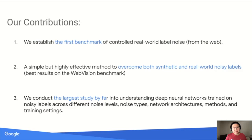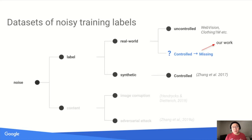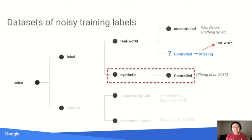Let's first look at our first contribution, which is a new dataset. While other types of noise exist, such as image content noise, our work focuses on label noise, which can be further categorized into real-world and synthetic label noise. As mentioned, we can construct controlled label noise for synthetic noise, but we only get uncontrolled label noise for real-world noise, like in existing datasets such as WebVision. Our goal is to construct controlled label noise for the real-world noisy label.